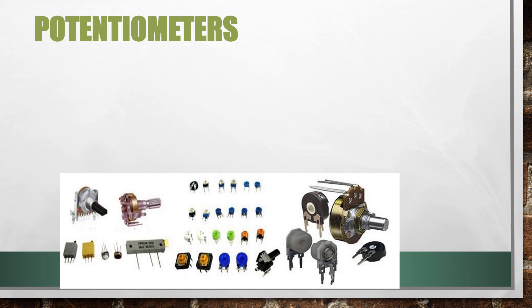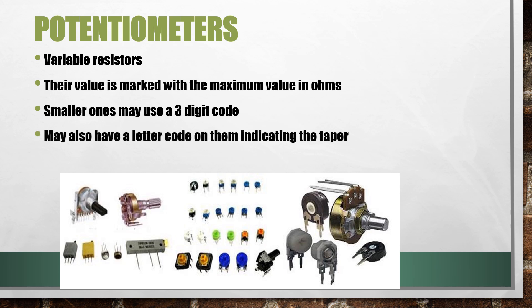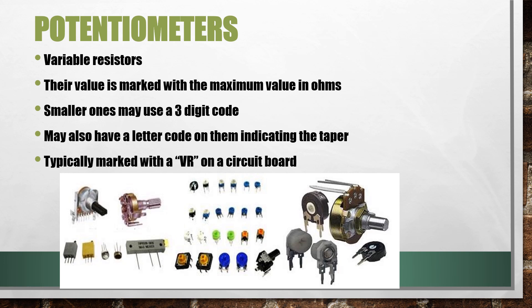What are potentiometers? Potentiometers are variable resistors. They normally have their values marked with the maximum value in Ohms. Smaller potentiometers may use a three-digit code where the first two digits are significant and the third digit is the multiplier. They may also have a letter code indicating the taper, which shows how resistance changes in relation to how far the potentiometer is turned. They are typically marked with a VR on a circuit board.